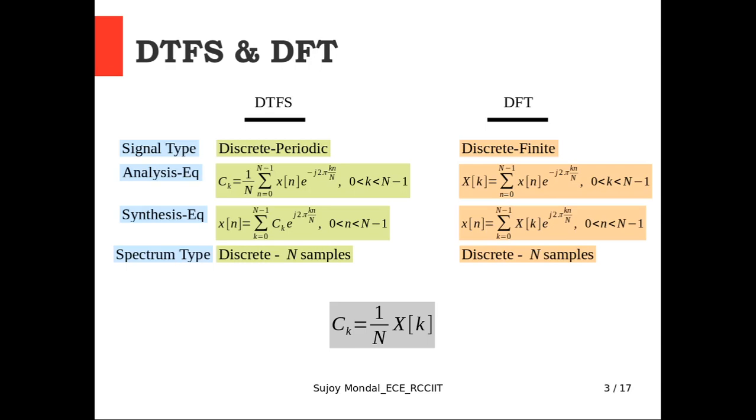Here we will see the comparison of two discrete time Fourier analysis tools. One is discrete time Fourier series, another is discrete Fourier transform. The type of input signal for discrete time Fourier series is discrete periodic, whereas for DFT that is discrete finite duration. Here we are considering that the period value of the periodic signal is capital N. And here we are considering the discrete signal finite duration is capital N.